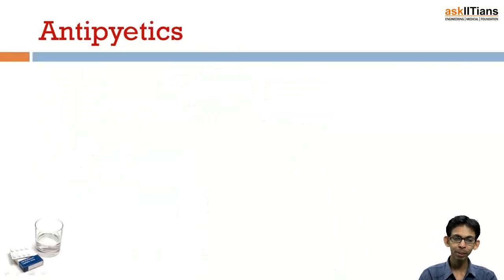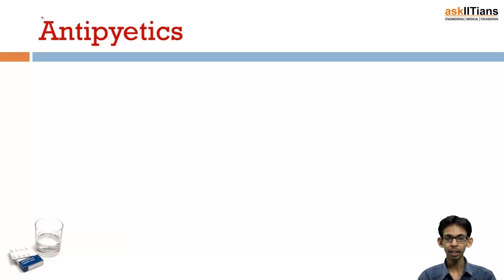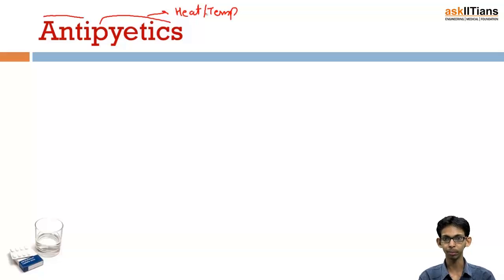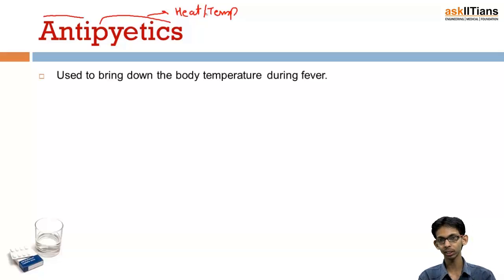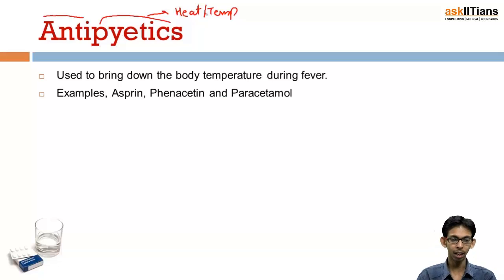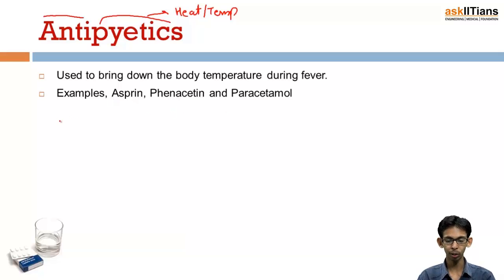Antipyretics: 'anti' means against, and 'pyretic' refers to heat or temperature. So antipyretics are those medicines or drugs which are used to bring down the body temperature during fever. The most common three antipyretic drugs are aspirin, phenacetin, and paracetamol.